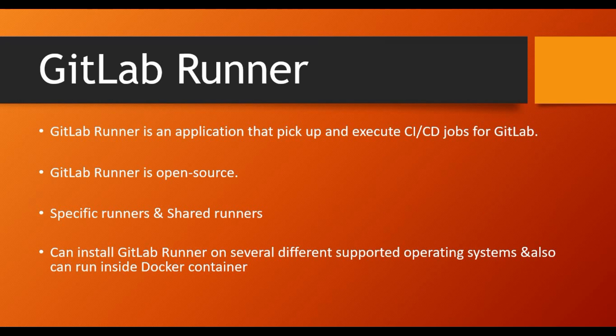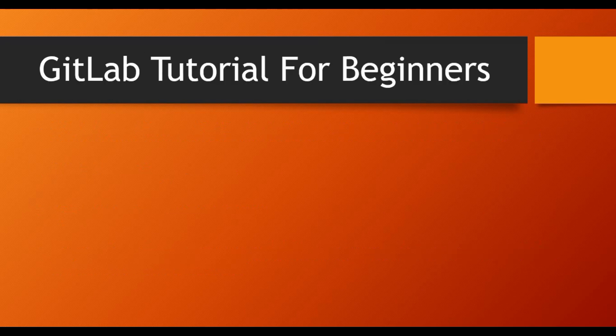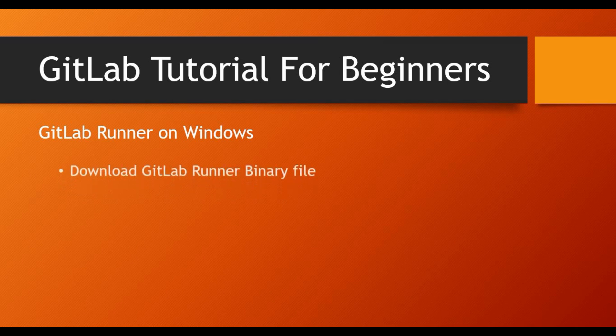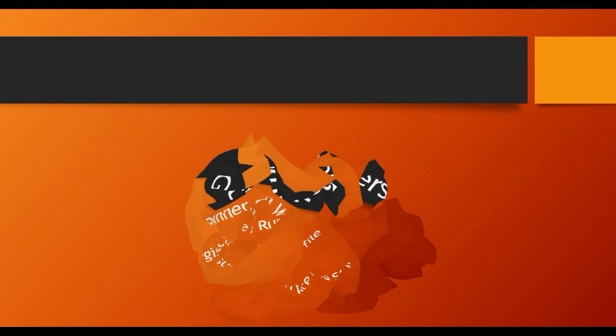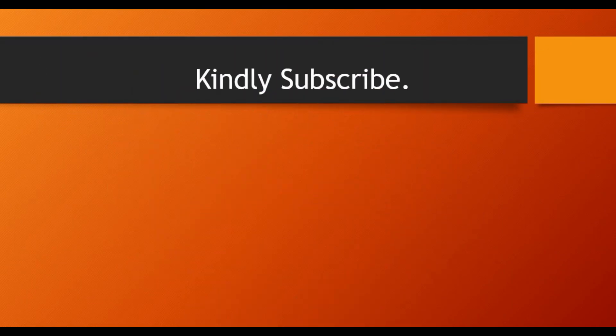In this tutorial we will be setting up GitLab Runner on a Windows machine. The steps we will follow are: download the GitLab Runner binary file, register the runner, install the runner as a service, and start it. You will then be able to see the runner configured in GitLab and use it to run your CI/CD jobs.